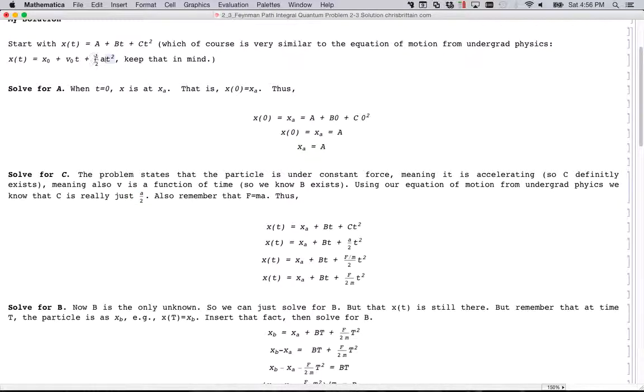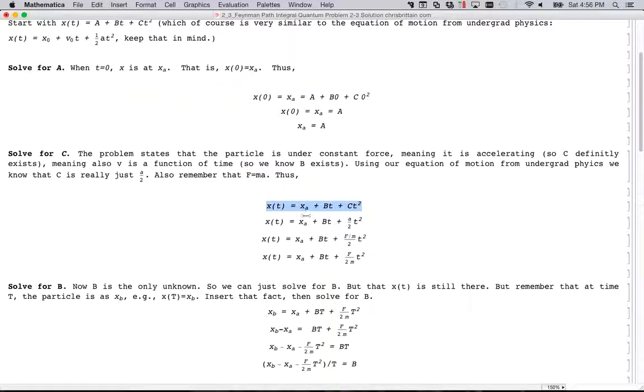we know that c is really just a over 2, right? So we go up here and we see c is really just the a over 2. And also remember that F equals ma. So using that knowledge, start out with our equation. We know what a is right now. We're solving for c. We know c equals this, right? Because that's the equation of motion from undergrad physics. And so then I substitute f over m, which is from F equals ma. And then I change it around so it looks nicer. So now I have c. My c equals this.